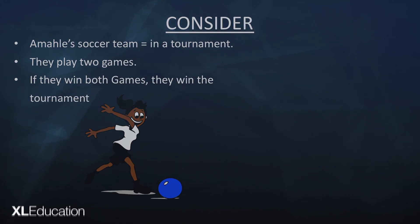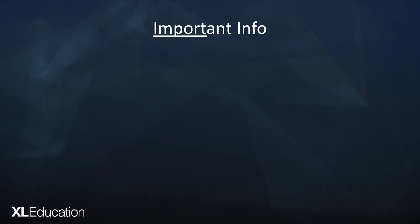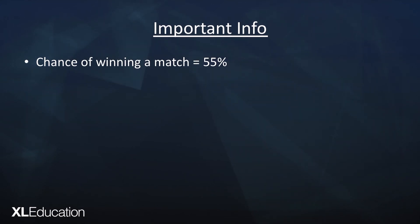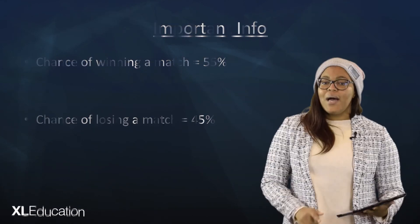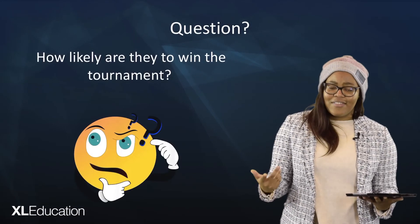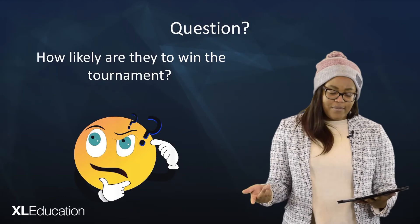Amatle has observed a couple of her past games and discovered that they have a probability of winning a match of 55 percent and their chances of losing a match are 45 percent. So Amatle has come to me with a question: how likely are they to win the tournament?